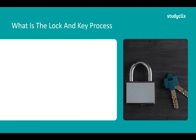To start off with, every neurotransmitter has a distinct shape. Neurotransmitters are our chemical messengers and these all have a slightly different chemical makeup which helps to give them that unique shape.